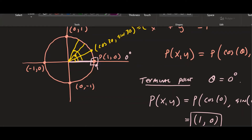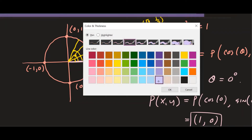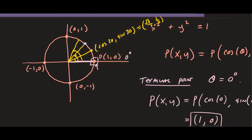For 45°, the terminal point is given by (cosine 45°, sine 45°). Cosine of 45° is √2/2 and sine of 45° is also √2/2. So the terminal point for a 45° angle is (√2/2, √2/2).